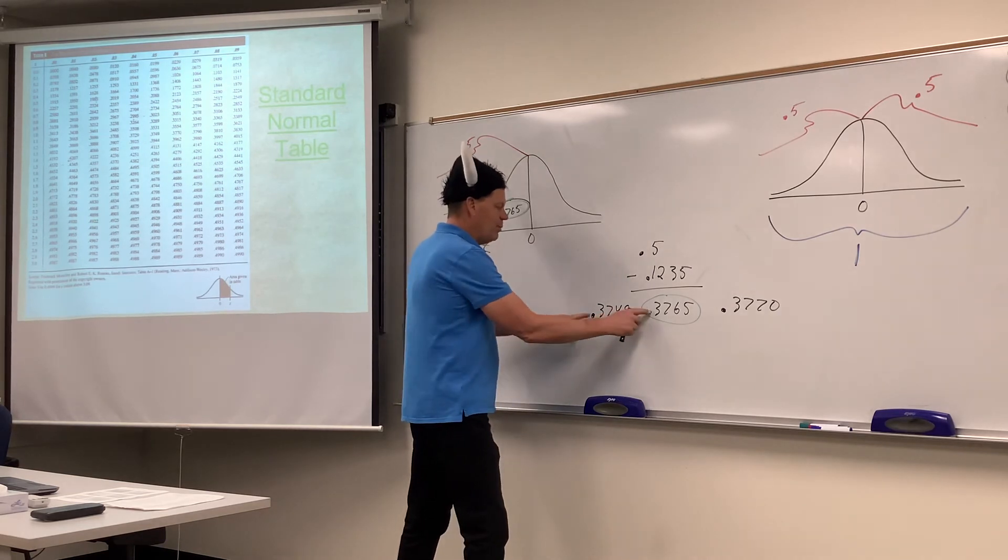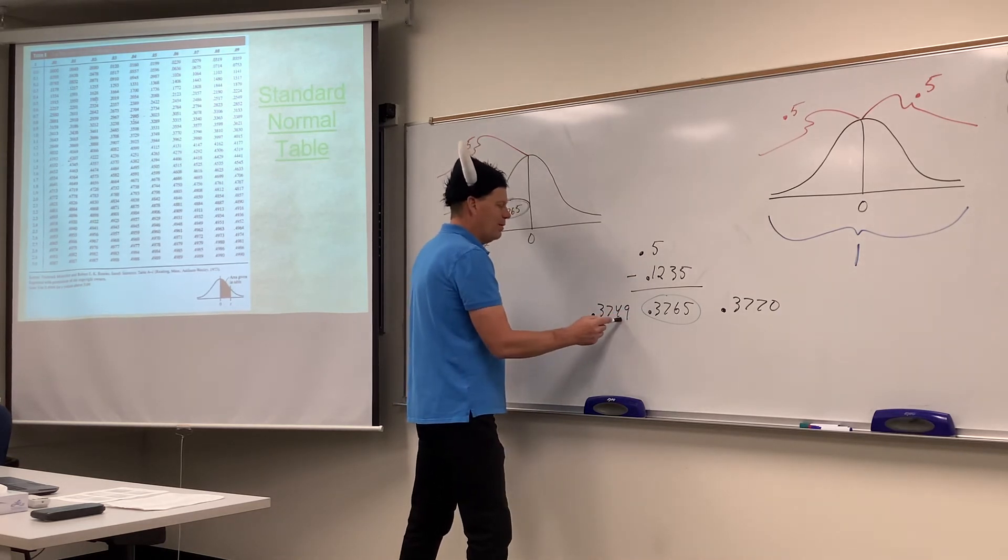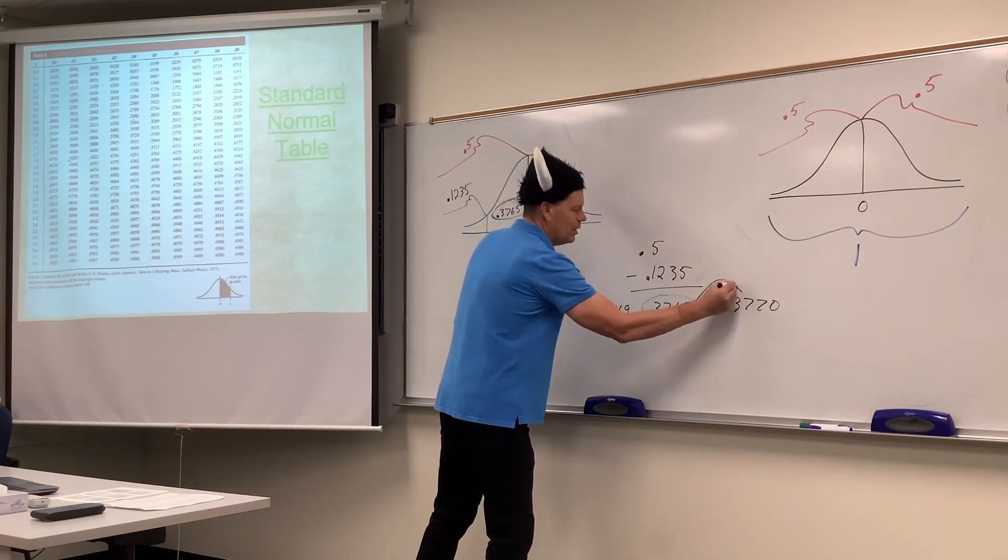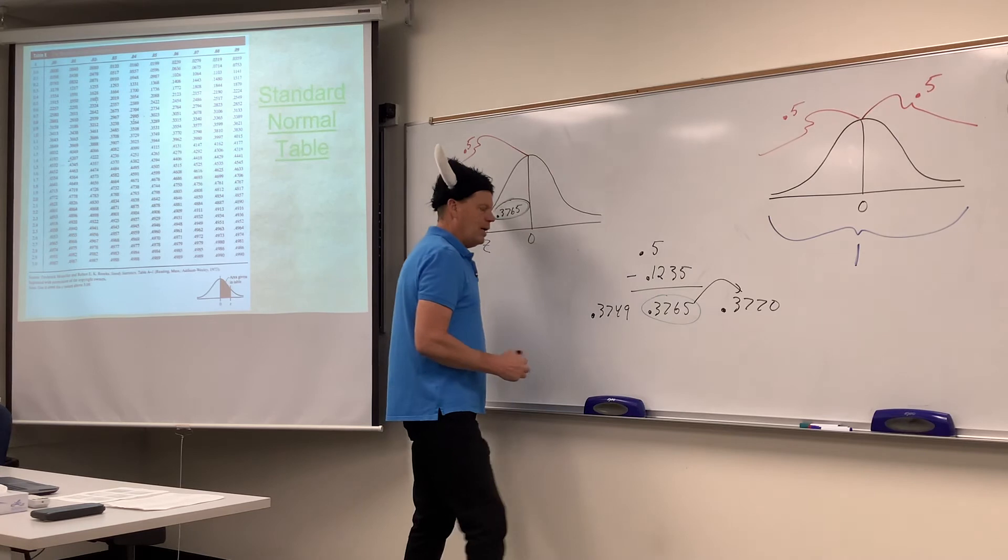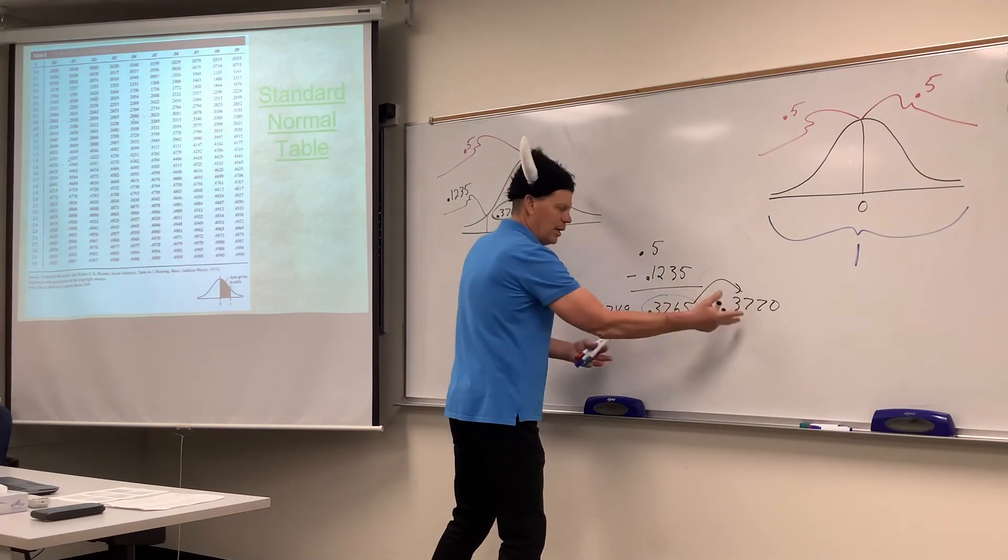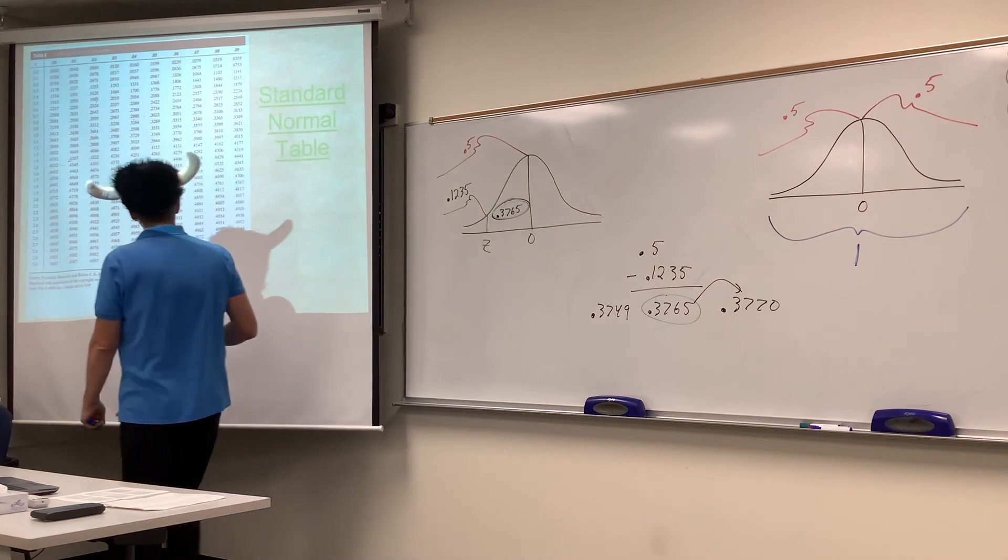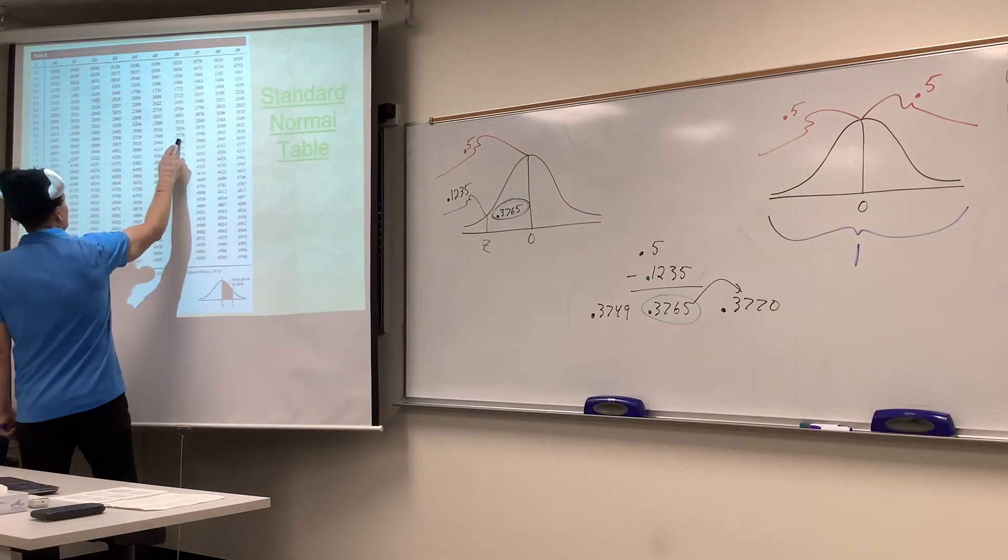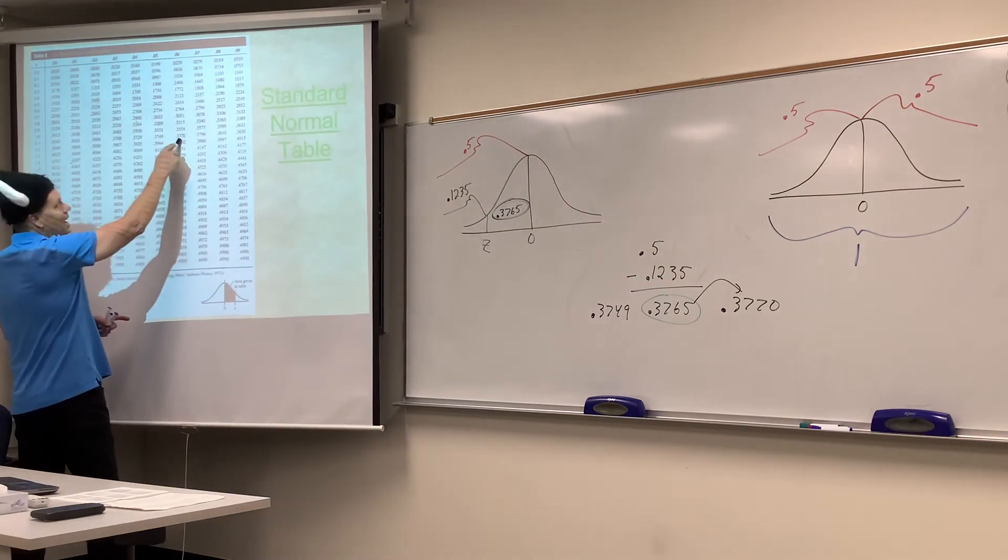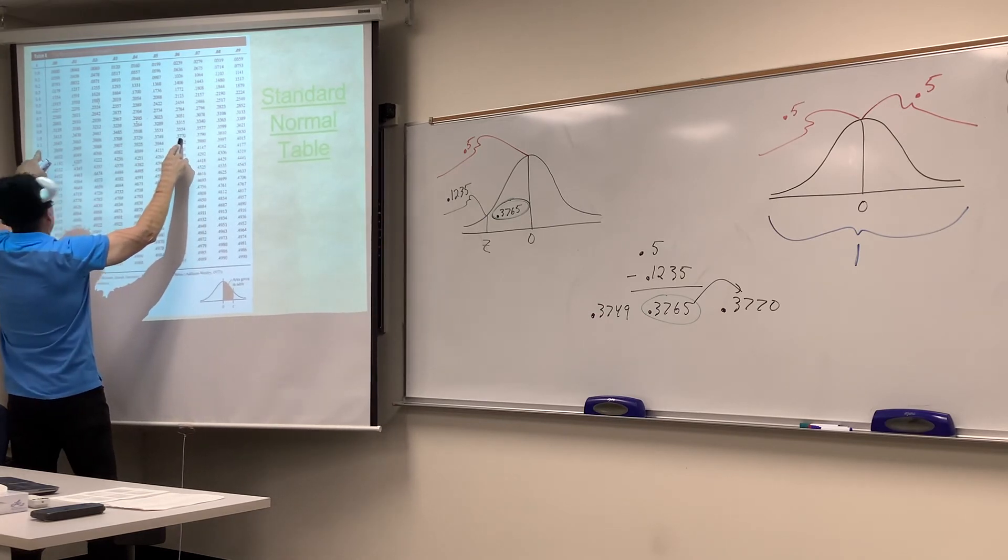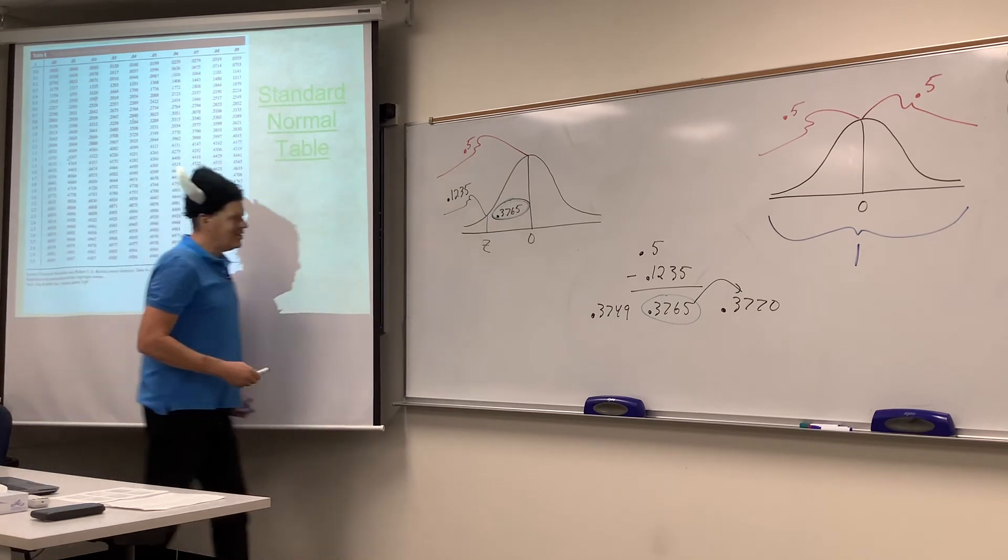So basically, if you remove the decimals, we're comparing 3749, 3765, 3770. And I hope you would agree it's closer to the 3770. So we're going to go to that one and look up the z-score that it lines up with. So 3770 is right here. Look at the one I gave you. And that lines up with 1.16.